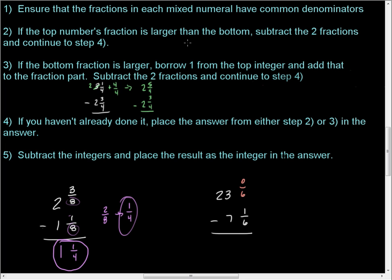If the top number's fraction is larger than the bottom, then it's not, is it? I got zero and one. Eh, that's not working, so I have to move to step three. If the bottom fraction is larger, borrow one, one, from the top integer, and add that to the fraction part. Here's what I mean by one.